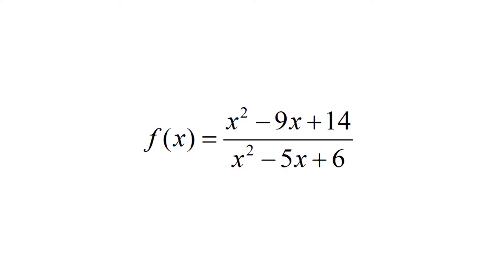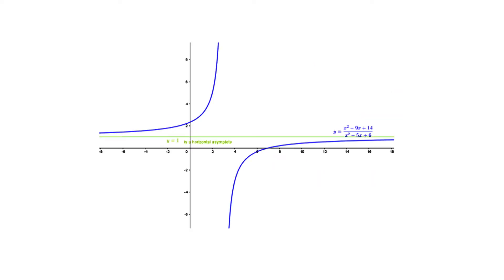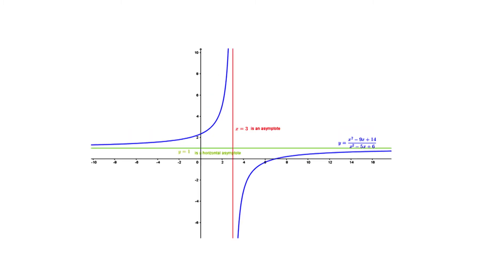As another example, consider f(x) = (x²−9x+14)/(x²−5x+6). Then lim(x→∞) f(x) = lim(x→∞) [1 − 9/x + 14/x²] / [1 − 5/x + 6/x²] = 1. Therefore y = 1 is a horizontal asymptote. We have already shown that x = 3 is a vertical asymptote, so this function has both vertical and horizontal asymptotes.